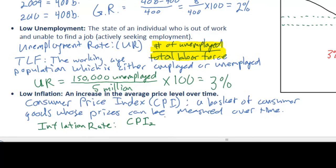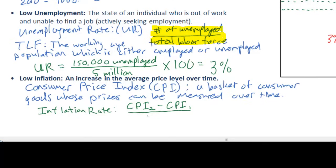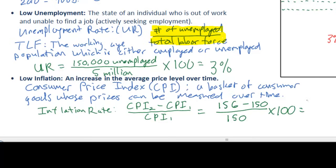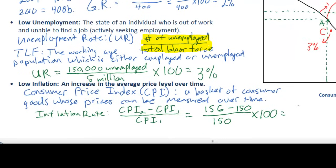Just like our GDP growth rate, the inflation rate is calculated by determining the percentage change in the CPI. We take CPI 2 - this might be 2010 for Switzerland - subtract the CPI from the previous year, 2009, and divide it by the original CPI from the base year. Let's assume that in Switzerland in 2010, the CPI was 156, but in 2009, the CPI was 150. So 156 minus 150 is 6, and if we divide 6 by 150, we get 0.04, which multiplied by 100 gives us an inflation rate of 4%. An inflation rate of 4% is considered fairly low, although slightly on the high side for Switzerland, which would prefer an inflation rate of between 2 and 3%.